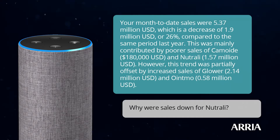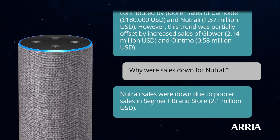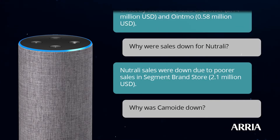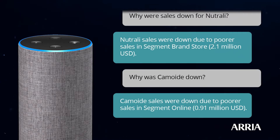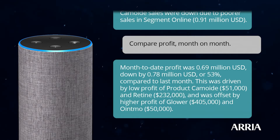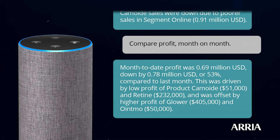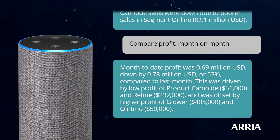Why were sales down for Neutrali? Neutrali sales were down due to poorer sales in Segment Brand Store, $2.1 million. Why was Kamoid down? Kamoid sales were down due to poorer sales in Segment Online, $0.91 million. Compare profit month-on-month. Month-to-date profit was $0.69 million, down by $0.78 million, or 53%, compared to last month. This was driven by low profit of product Kamoid, $51,000, and Retin, $232,000, and was offset by higher profit of Glauer, $405,000, and Dointmo, $50,000.